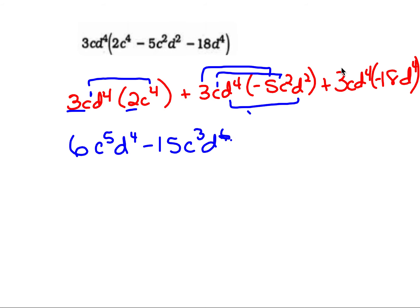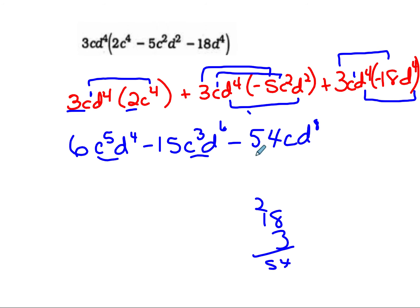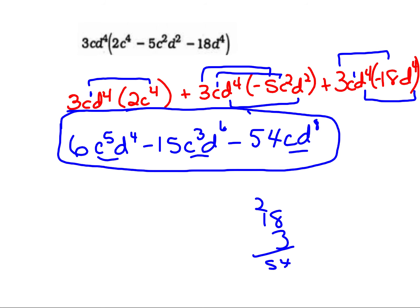Then 3 times negative 18: 18 times 3 — 3 times 8 is 24, carry the 2, so 54 — giving minus 54. c to the 1st, and there's no other c, so just c to the 1st — but we don't write 1 as an exponent in our final answer, so just c. Then d to the 4th times d to the 4th is d to the 8th. Looking at the variable parts, they all have c's and d's but not to the same power, so I can't combine any like terms. That's my answer.